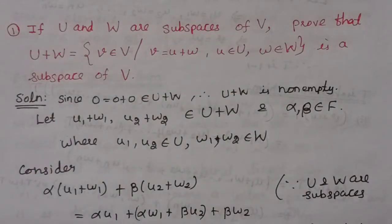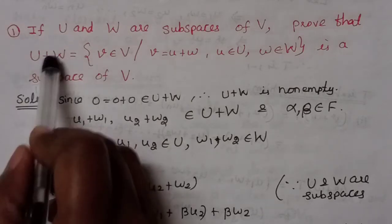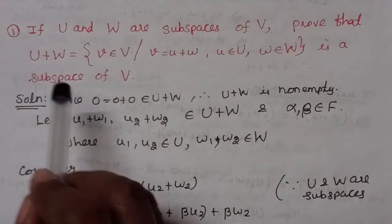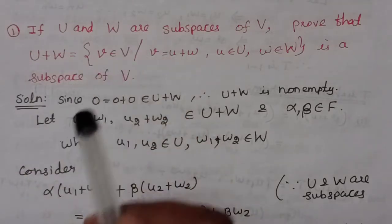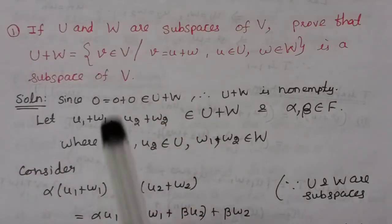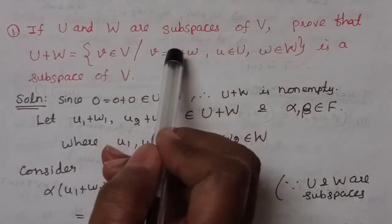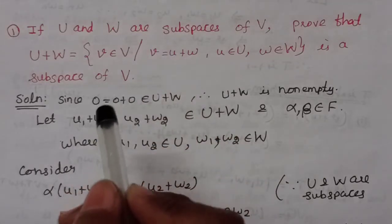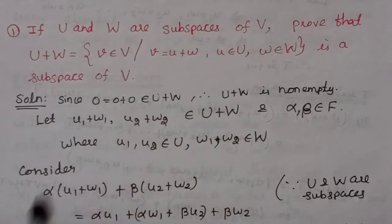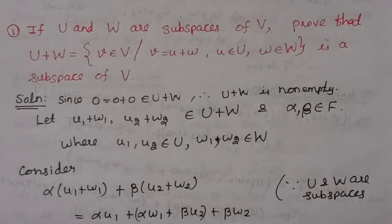We will prove that U plus W is a subspace. We need to show that vector addition and scalar multiplication belong to U plus W, that the set is non-empty, and that it forms an abelian group under plus.